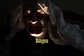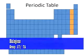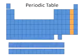Right next to the noble gases in group seventeen are the halogens — elements like chlorine and bromine, and so on.